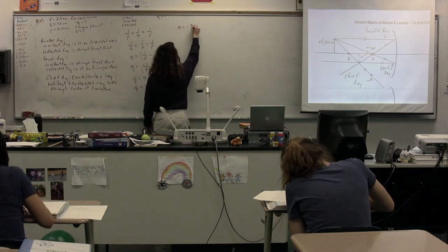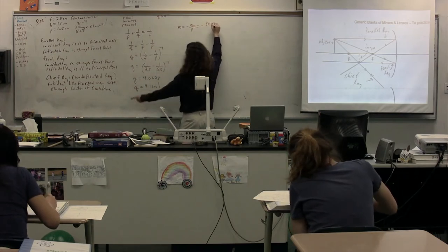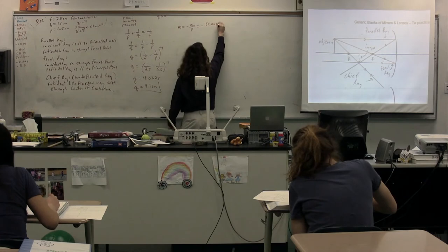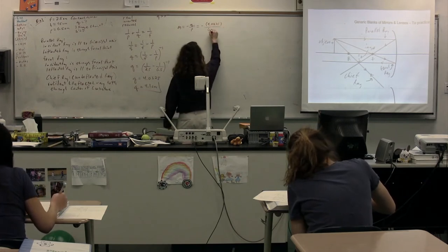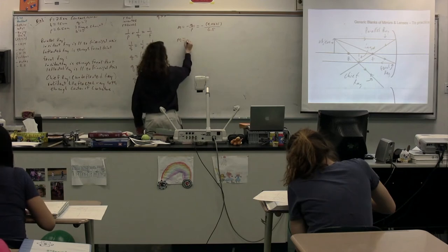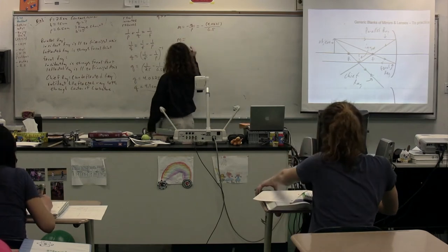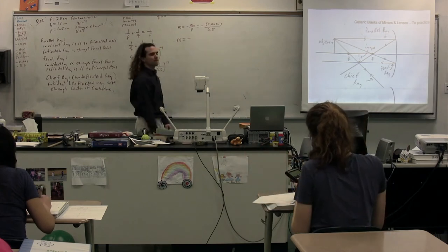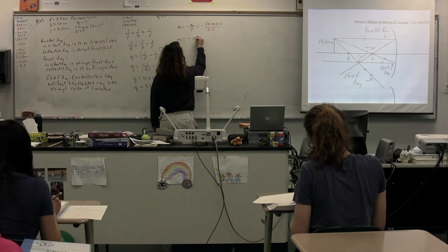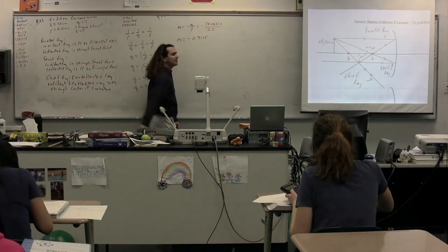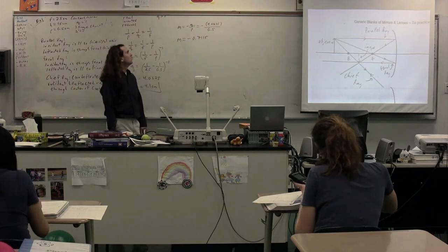Magnification equals negative Q, the image distance, over P, the object distance. So negative 4.0625 divided by the object distance, which was 6.5. The magnification equals 0.7115 — independent confirmation: 0.7115.